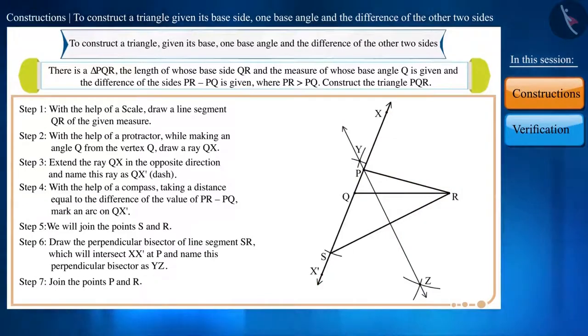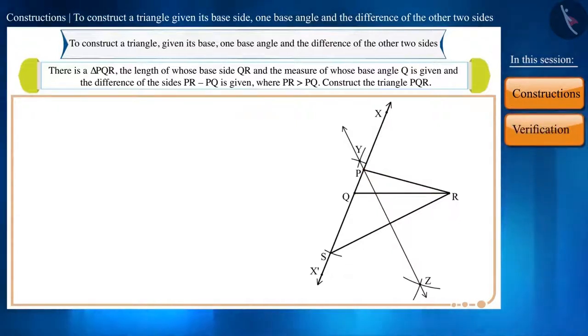And friends, in this way, the formed triangle PQR is the required triangle which we wanted to draw. Now let's check our construction. For this, we will have to show that the difference of the two sides PR-PQ will be equal to the given difference SQ.